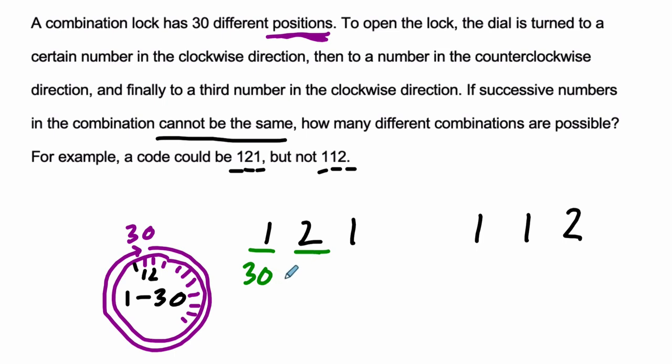It's just that the numbers can't be equal. So there were 30 choices here, any number is fine, but the next number just can't be the same so there are 29 choices.